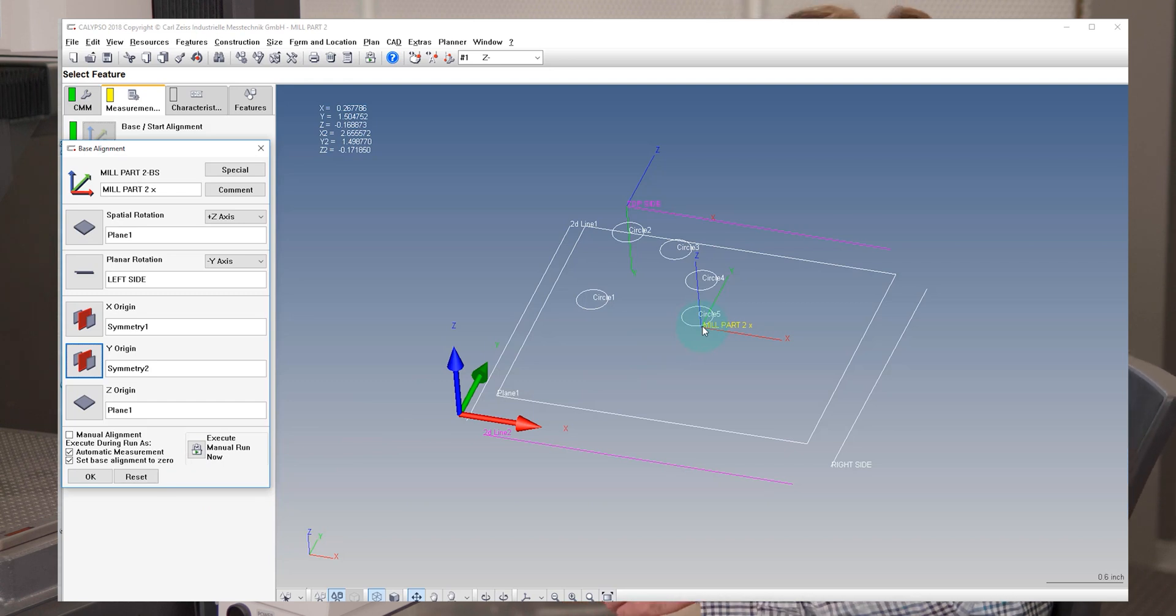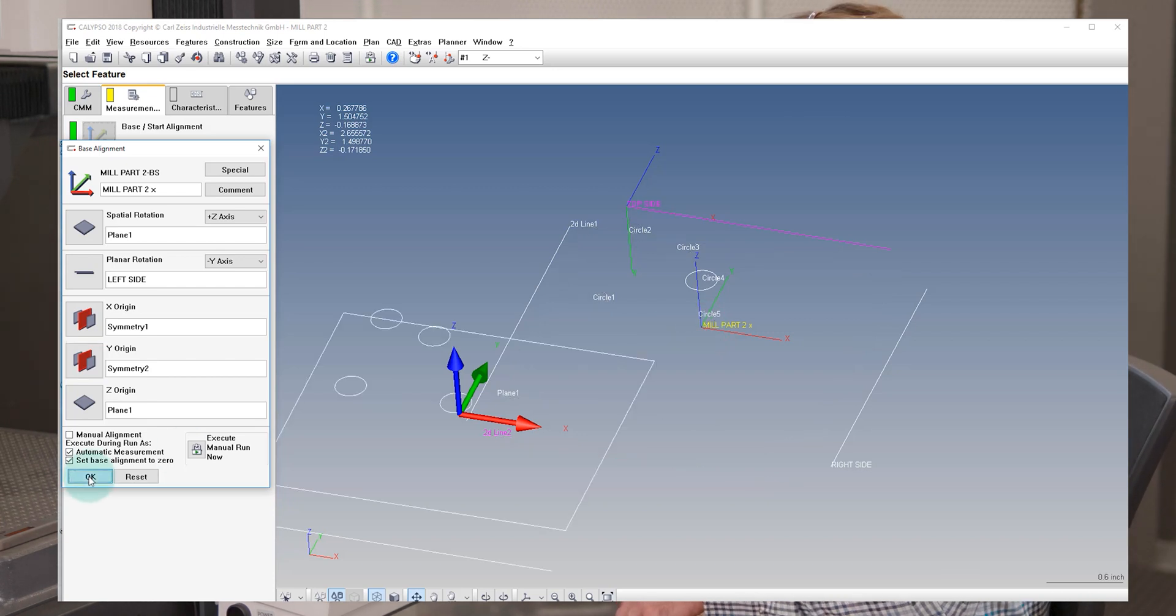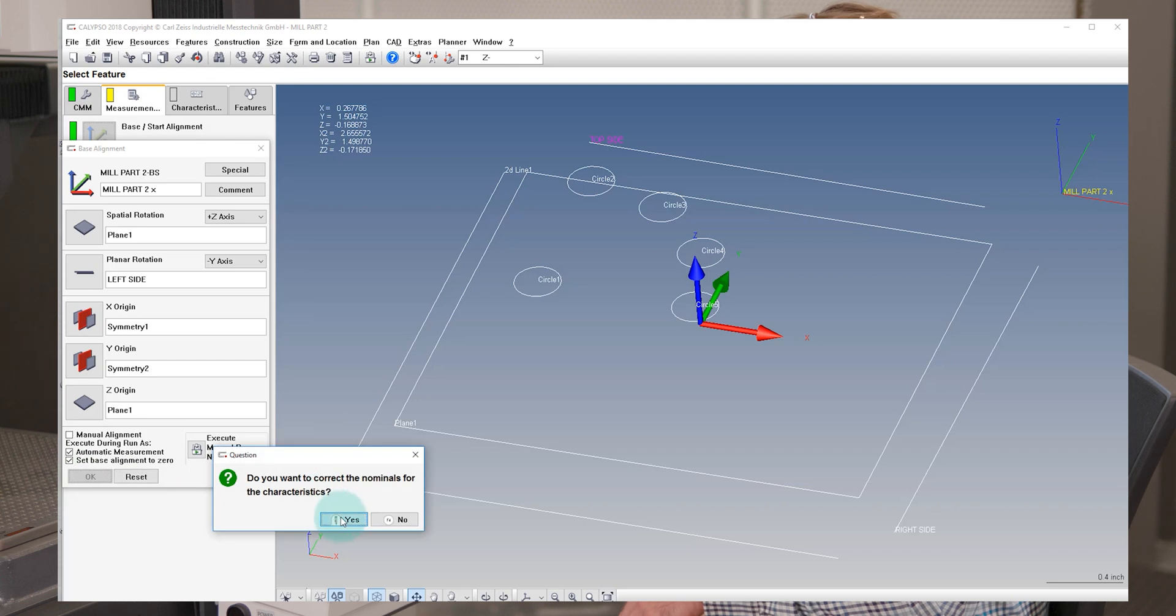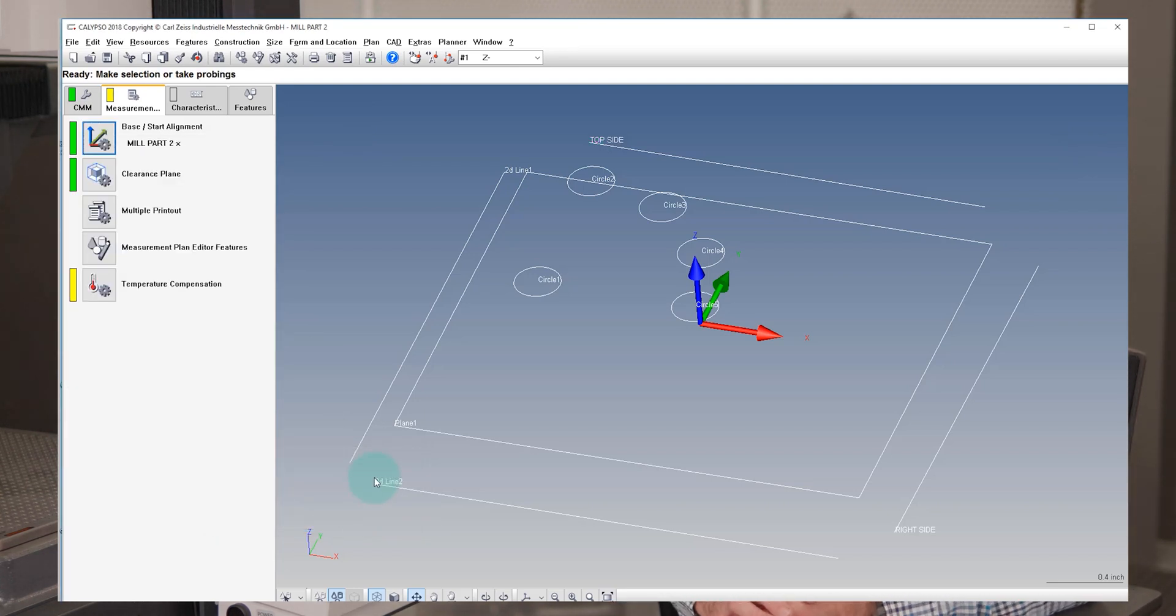And we notice that triad has moved to the middle of the part. So now I'm going to hit OK. I'm going to hit no for the clearance planes and I'll hit yes for the default nominals. So we've moved our coordinate system from the corner of the part to the center of the part.